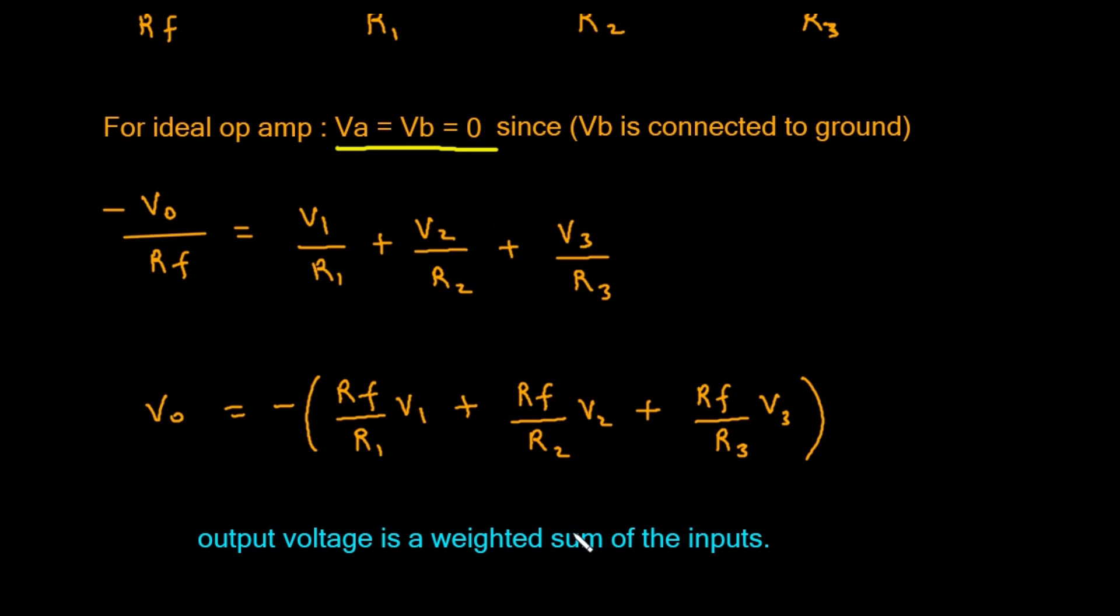By choosing the resistor values, we can control how much each input contributes to the final output. For example, if we wanted V1 to have twice as much impact as V2, we could make R1 half the value of R2.